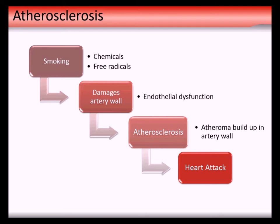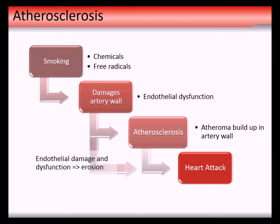The way smoking damages the artery wall starts with the cells that line the artery, called endothelial cells. They function in many different ways to regulate vascular function, and damaging the way these cells behave is what helps promote the whole process of atherosclerosis. Atherosclerosis - a long word - has two halves: 'athero' refers to fatty deposits, and 'sclerosis' is the fibrous material that tries to encase them. Damage to the artery wall in the presence of atherosclerosis can directly lead to a heart attack.